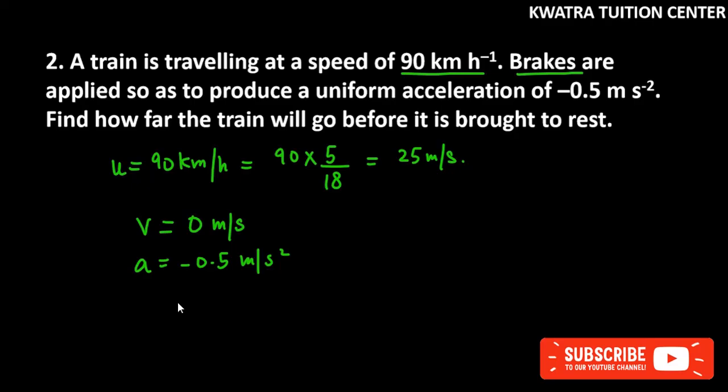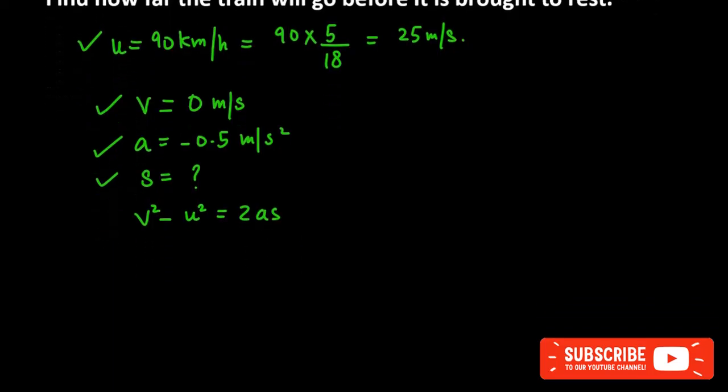Now they are saying find how far the train will go before it is brought to rest. So you have to find S. And which is the best formula for which we can find S? You have V, you have U, you have A, and S to find. So the formula should be v squared minus u squared is equal to 2as, because you find S and the rest of the values are given to you.